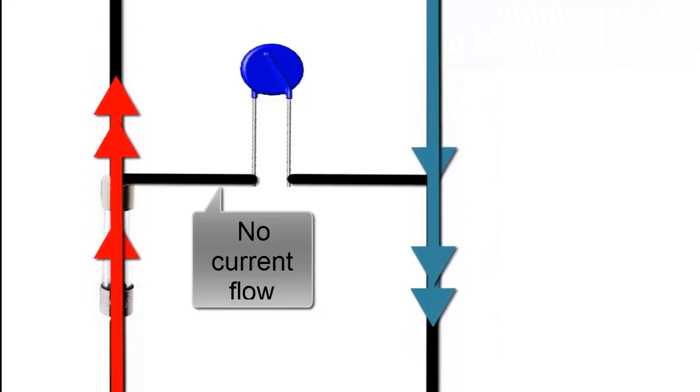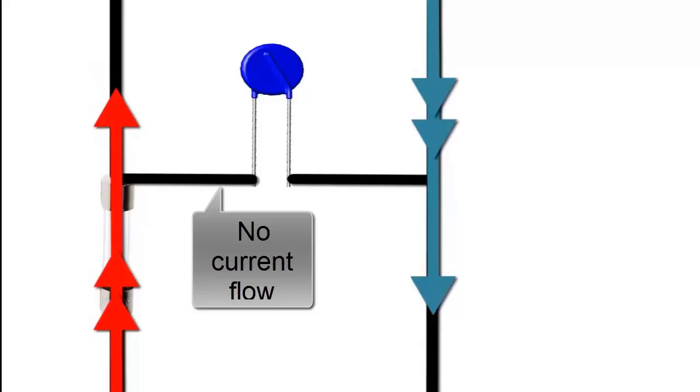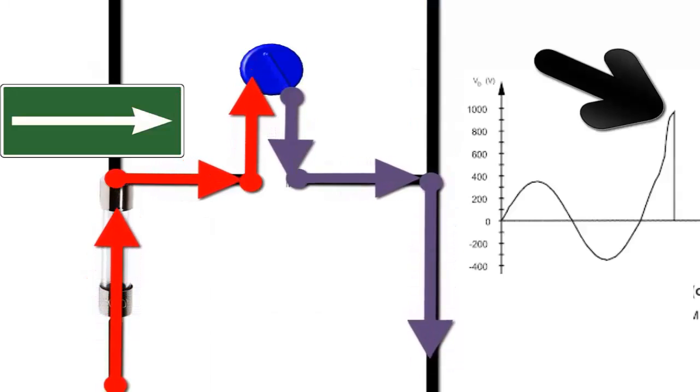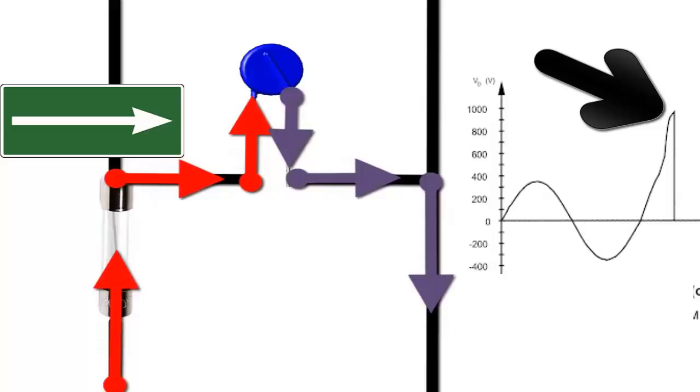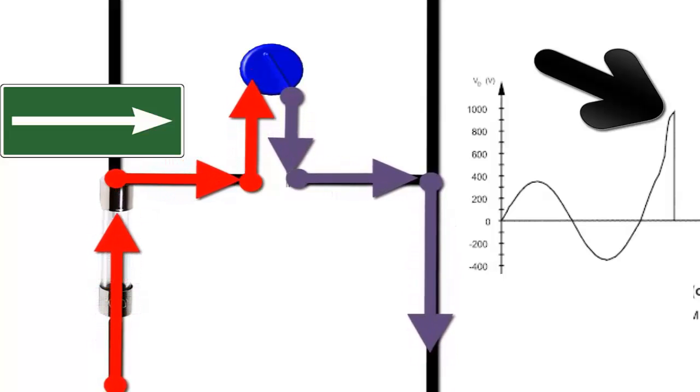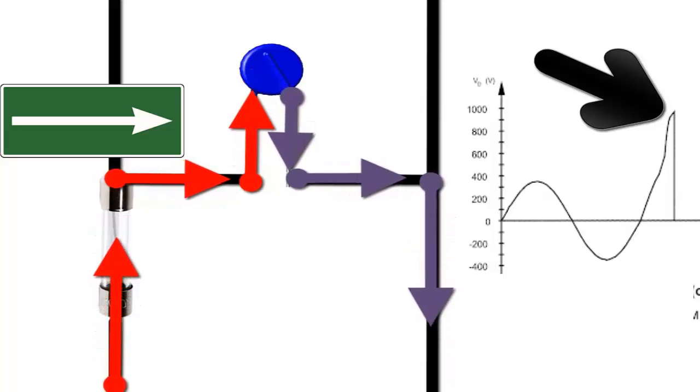Upon receiving a higher voltage, the varistor reduces its internal electrical resistance to minimal values, allowing the current to pass through and preventing it from flowing into the electronic board circuit, thus preventing damage to other components due to higher than normal voltage.